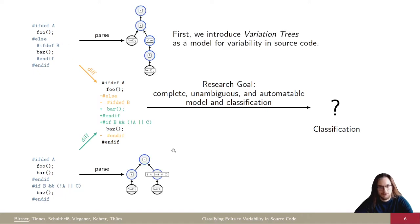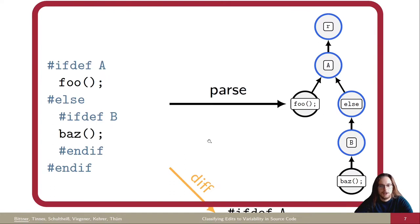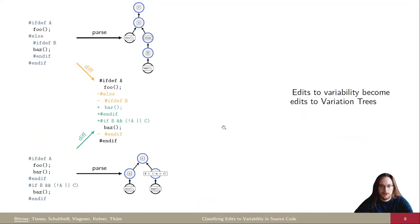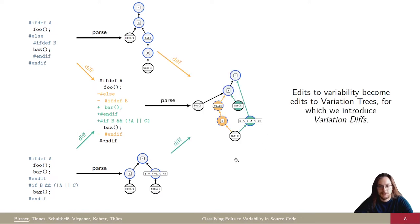And as a first step, we introduce variation trees as a model for variability in source code. Let's take a closer look. Variation trees represent the abstract syntax of variability. So each variability annotation in blue has a node in the corresponding tree also highlighted in blue. And the source code lines are represented by black-bordered nodes. There's a synthetic root node, which is mostly there to make the math easier.